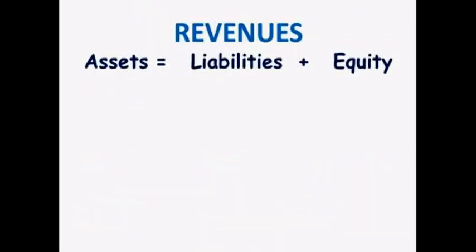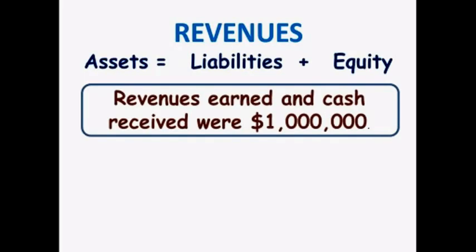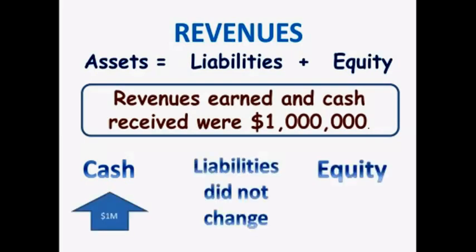Let's start with revenues. Let's say we have a store and it had a million dollars of sales last year, and all its customers paid in cash. Assets increased because cash increased. Liabilities were not affected. Equity increased because an increase in revenue increases equity. Our accounting equation balances.